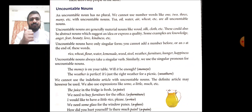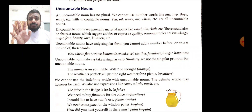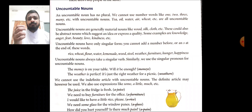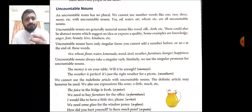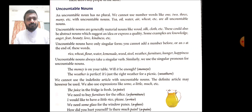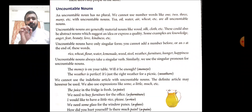The first rule for uncountable nouns: they have only a singular form. Unlike countable nouns, which can be singular or plural, we cannot add a plural ending. For example: rice, wheat, flour, water — we cannot say 'a water' or 'waters.' The second rule: uncountable nouns always take a singular verb, and we also need to use a singular pronoun with them.